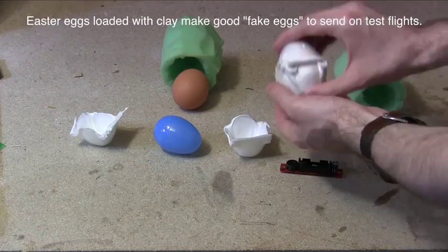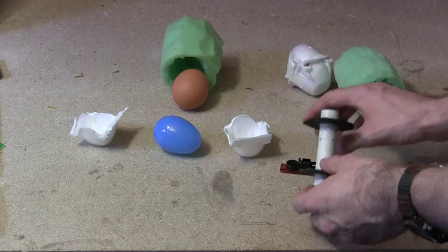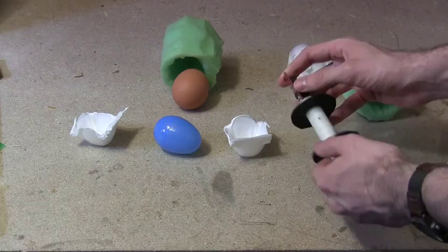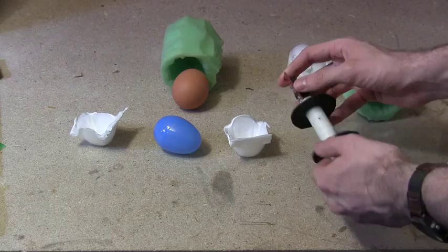We need to be sure we can easily withdraw our payload without forcing anything. Cracking the egg when extracting it from the rocket is a terrible feeling. We can help this by sanding the edges of the altimeter mount's centering rings so that it can slip easily into the rocket.